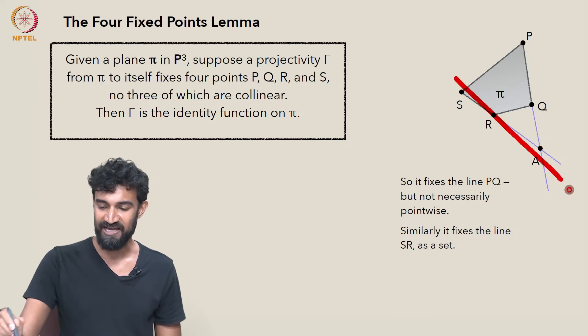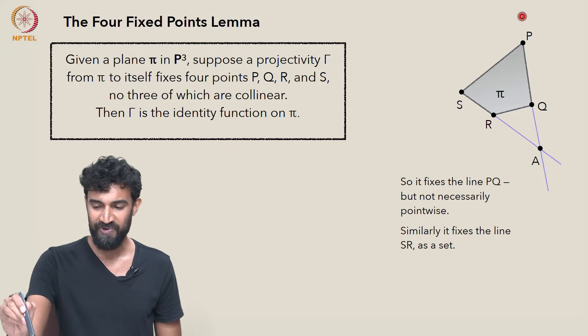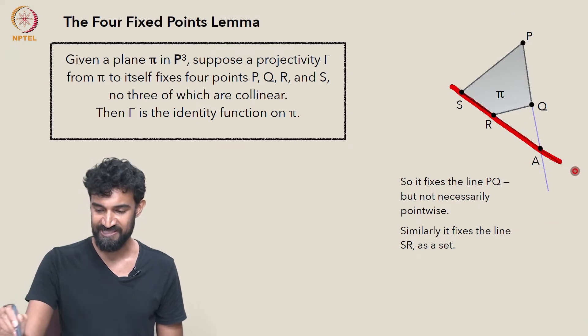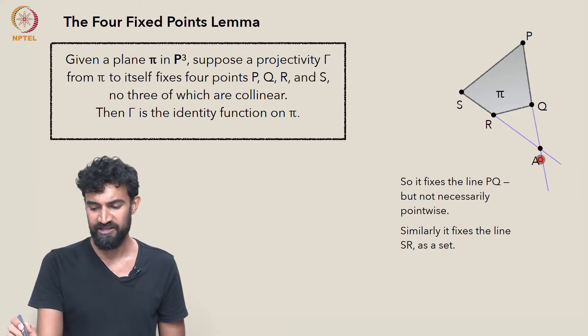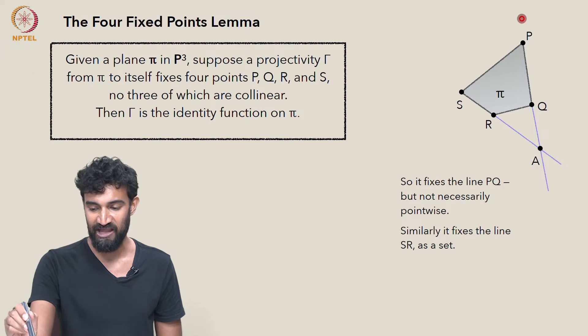All we know is that it fixes this line and this line as sets. But this line and this line intersect at a point which I'll call A. But γ is fixing this line and it's fixing this line. It's therefore going to have to take the intersection of these two lines, which is this point A.